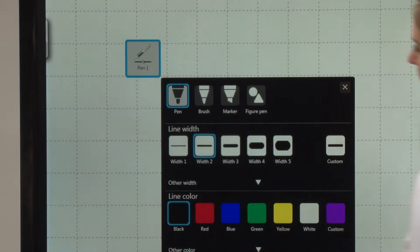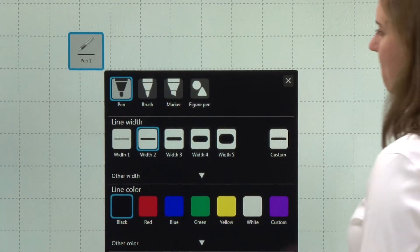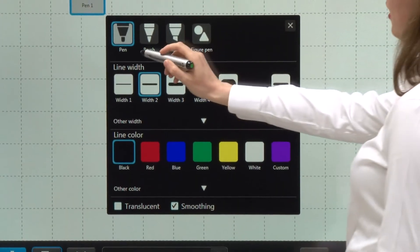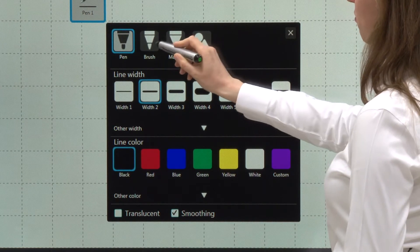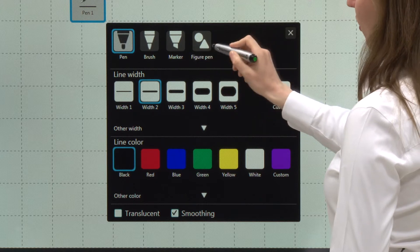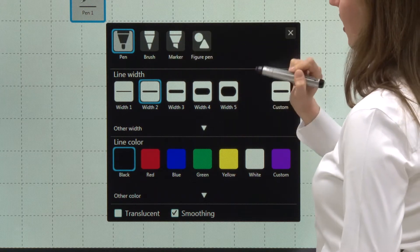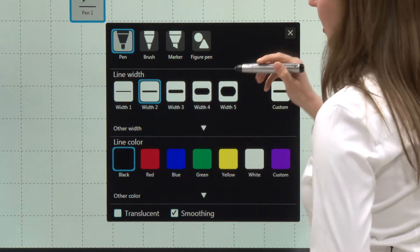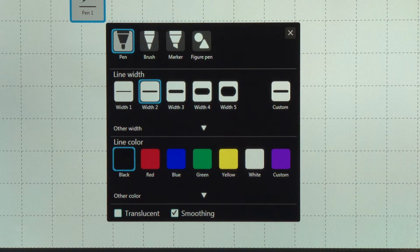Let's start with this one, Pen 1. On the very top you'll see I can choose a pen, brush, marker, or the figure pen. Each of these has a different function. It changes the way you write on the board.